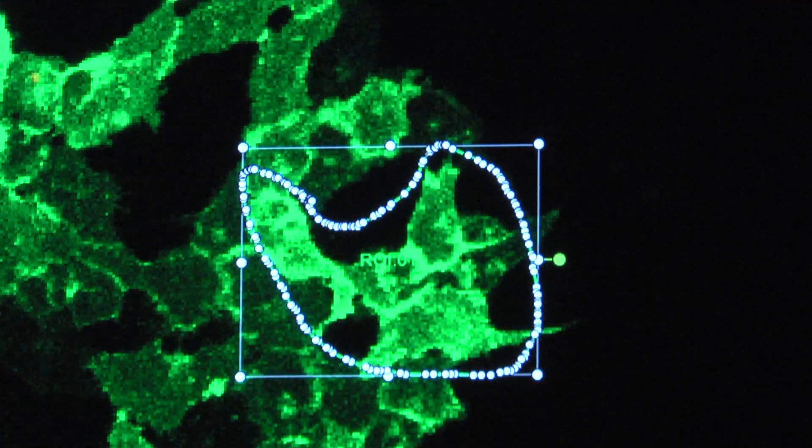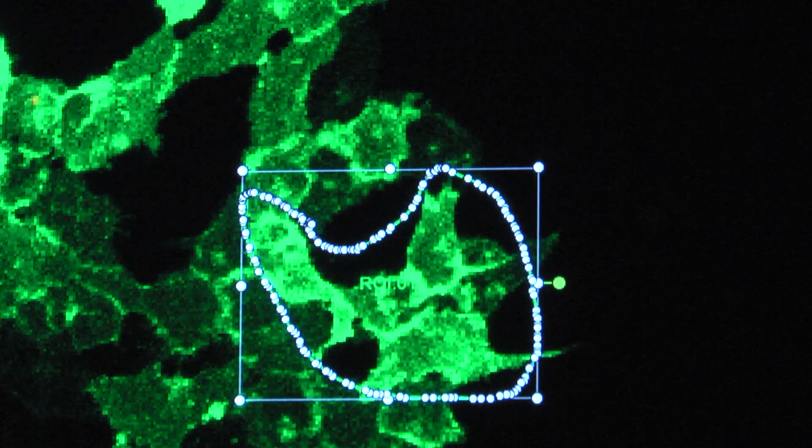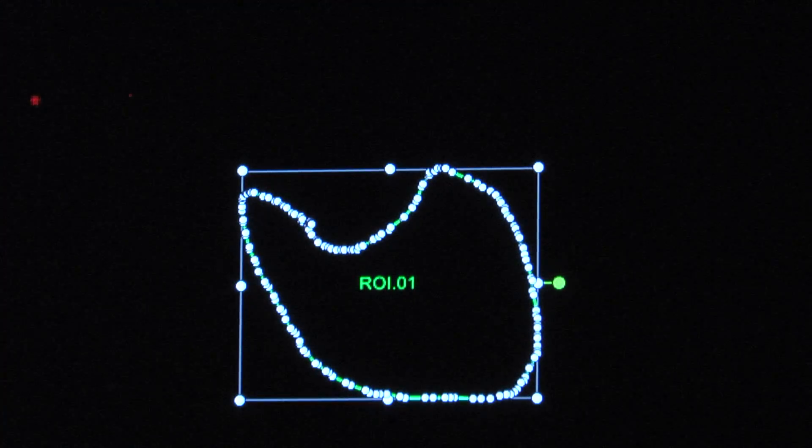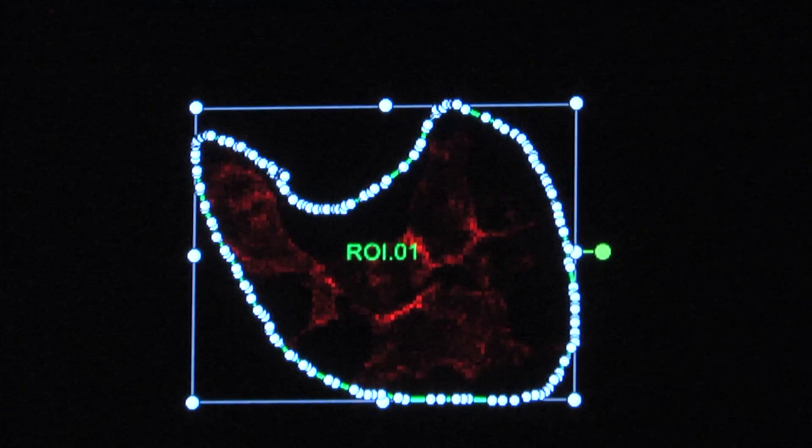But then we pick the cell we want and we use a laser to turn that cell, or perhaps even a group of cells, red. So we're able to zap any cell we want and turn it red based upon any behavior that we want.